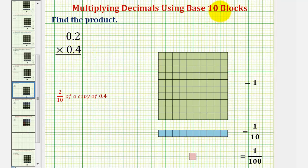We want to find the product using base 10 blocks. We have 2 tenths times 4 tenths. Because we're working with decimals, we'll define the base 10 blocks as follows.